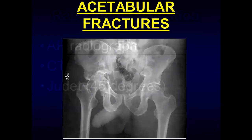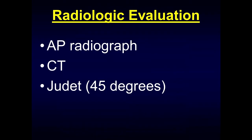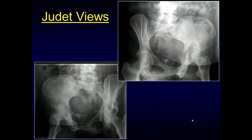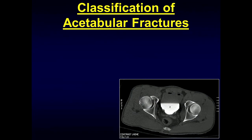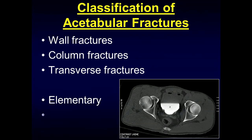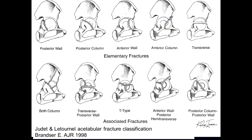Moving on to acetabular fractures — the workup is the AP radiograph, CT is obtained in all individuals with acetabular fractures, and depending on the surgeon, they may get Judet views, which are 45-degree oblique views. The Judet views allow you to see the posterior wall nicely as well as the iliopectineal lines. The classification of acetabular fractures includes wall fractures, column fractures, transverse fractures, elementary fractures, and associated fractures — as described in the Judet and Letournel classification.